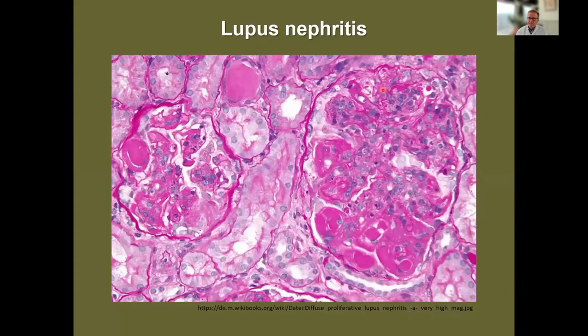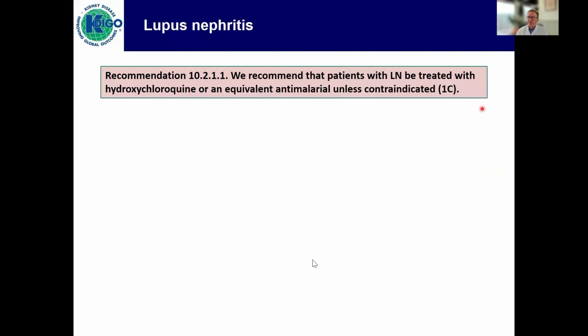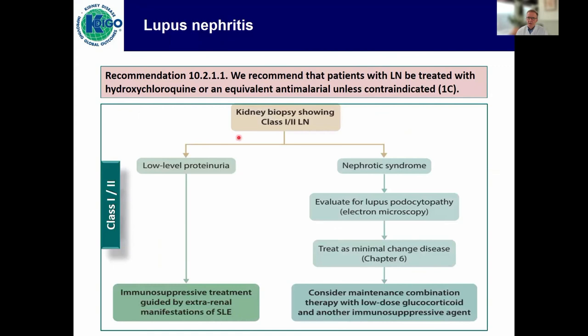Finally, lupus. We recommend that patients with lupus nephritis be treated with hydroxychloroquine unless contraindicated — this applies to all lupus nephritis and should be your baseline therapy, given its fairly good safety profile. Retinal depositions from hydroxychloroquine do occur and you need to check for it, but the risk is very low. If you have a kidney biopsy showing class I or II and low-level proteinuria, immunosuppression should be guided by anything outside of the kidney. If you have nephrotic syndrome, look for lupus podocytopathy, ask your pathologist for electron microscopy, and if present, treat as minimal change.